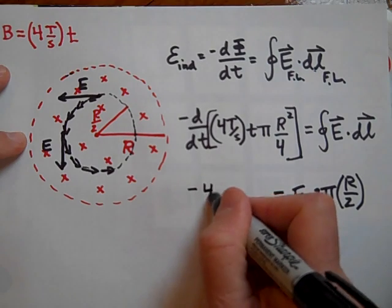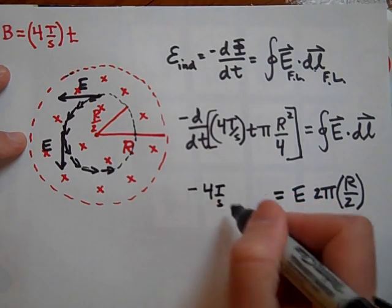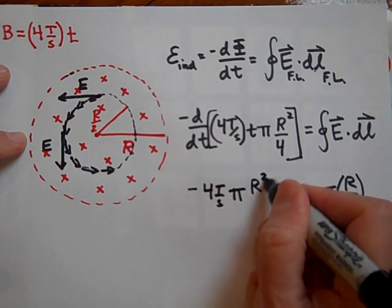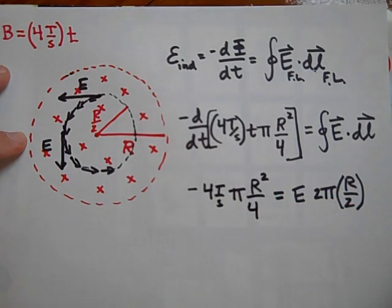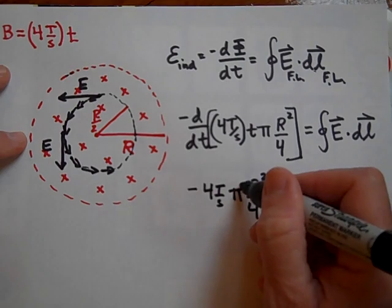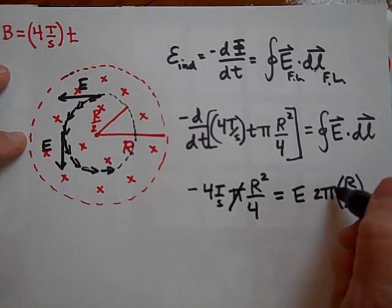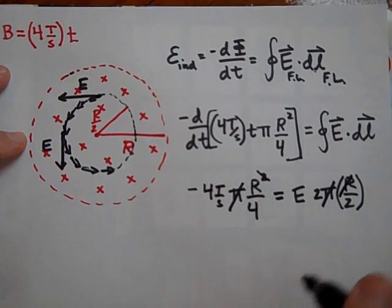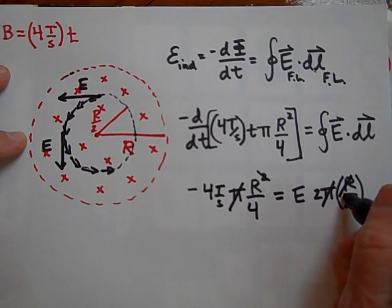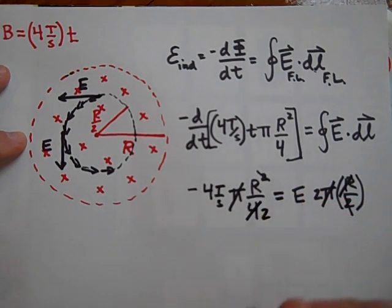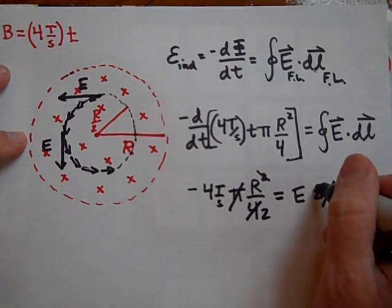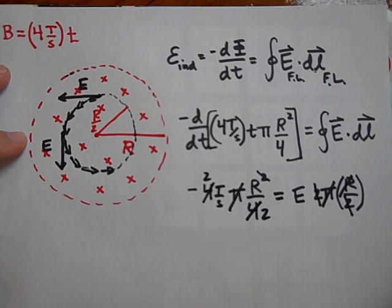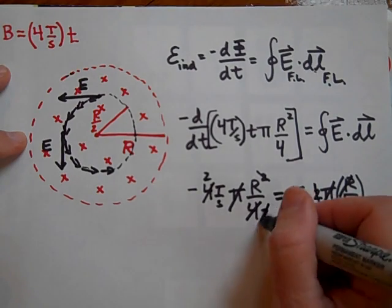Negative 4 Teslas per second, pi R squared over 4. So now we can get rid of some stuff here. Get rid of the pi, get rid of one of the R's, get rid of this 2 and make that a 2, get rid of this 2 and make this a 2.